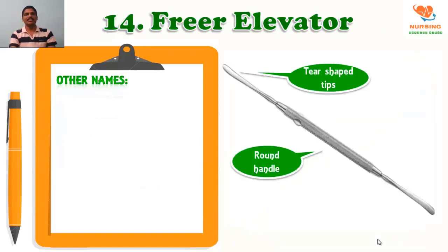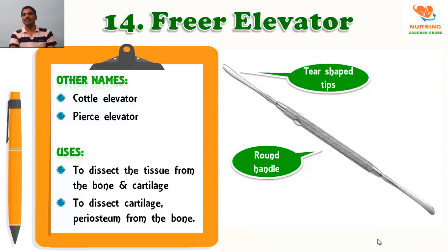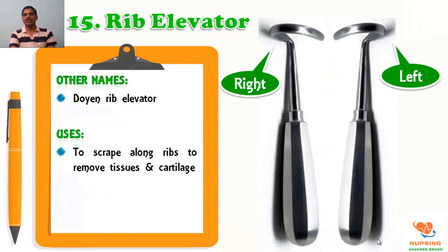The Cobb elevator — other names are Cottle elevator, Virchow elevator — used to dissect the tissue from the bone and cartilage, or to dissect the cartilage periosteum from the bone area. On the picture you can see the round handle and the tear-shaped tips on both ends. Rib elevator — other name Doyen rib elevator — used to scrape along the ribs to remove tissue and cartilage on both sides.